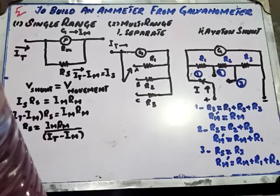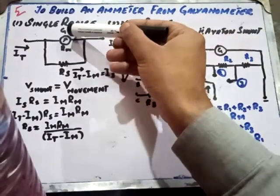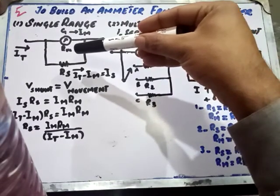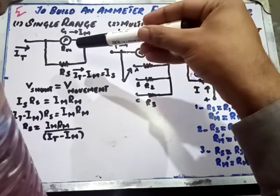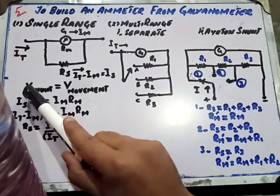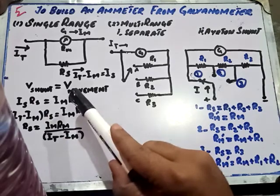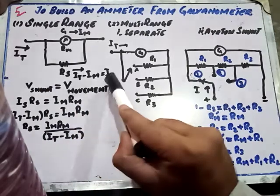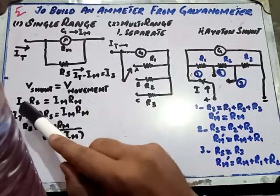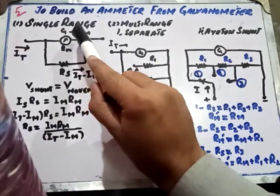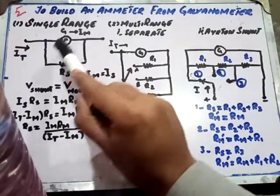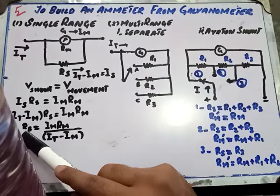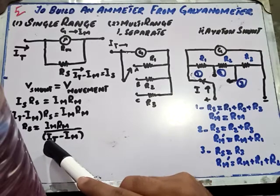Since RS is connected in parallel with the galvanometer, the voltage across the galvanometer equals the voltage across RS. We can write: voltage across the shunt equals voltage across the galvanometer movement. The current through the shunt IS equals IT minus IM, so IS × RS = IM × RM. Rearranging, we get the expression for RS: RS = (IM × RM) / (IT − IM).